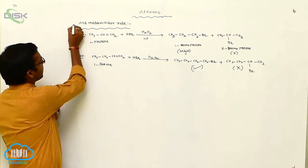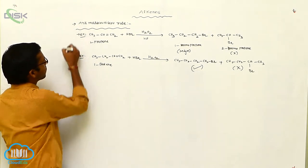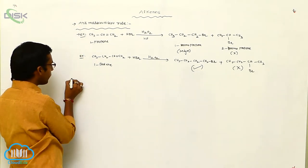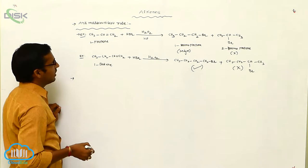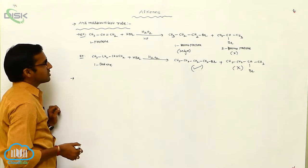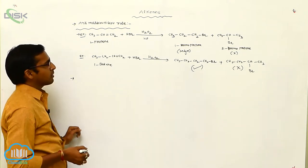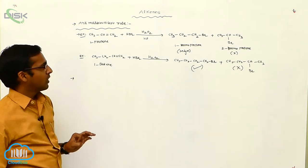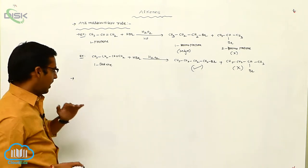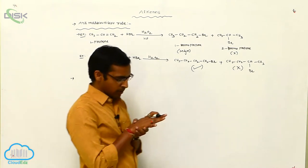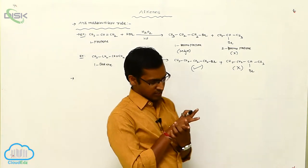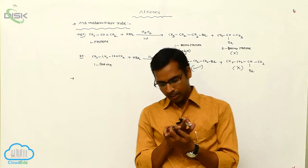This is our anti-Markovnikov rule. These are the chemical properties of alkenes, and the chemical properties of alkenes are now completed.